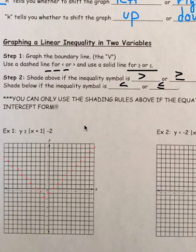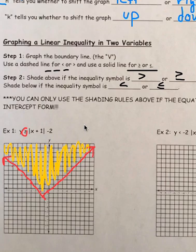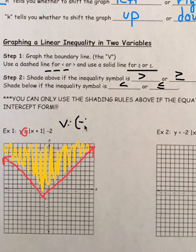Because it's greater than or equal to, these are going to be solid lines. Then we shade above since it's greater than or equal to. We moved left 1 and down 2 for our vertex, so we note the vertex at negative 1, negative 2 to tell us where to start from.